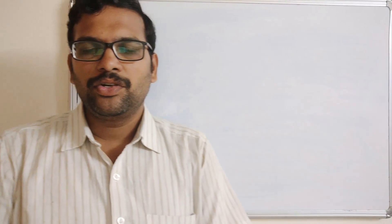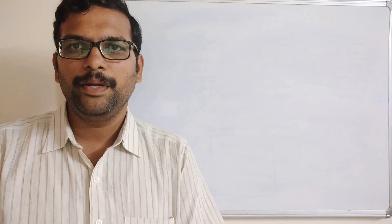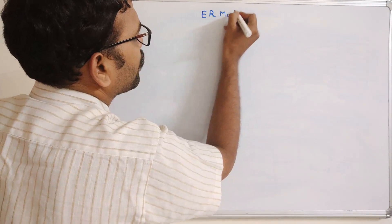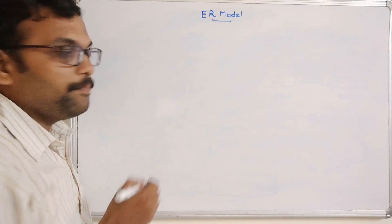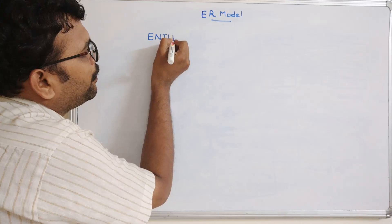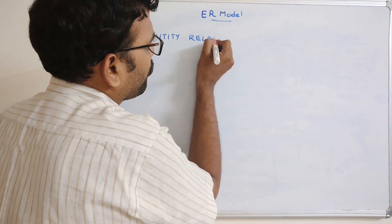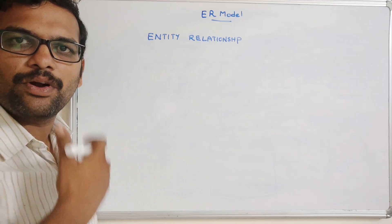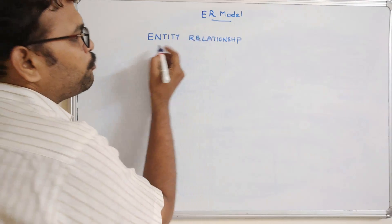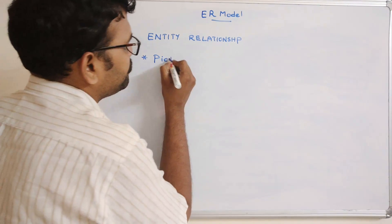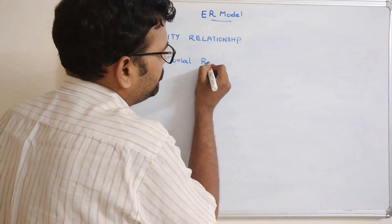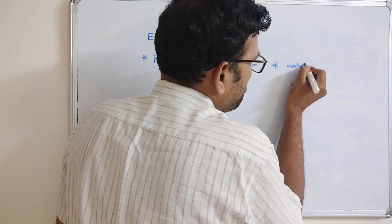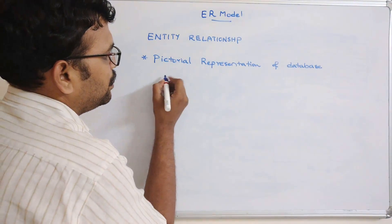Hello friends, welcome back to our channel. In today's session we discuss one more topic in DBMS — the ER model. ER stands for Entity Relationship model. In the previous sessions we discussed what is an entity, what is a relationship, and what are the different types of relationships. This ER model is a pictorial representation of a database showing entity types and their relationships.